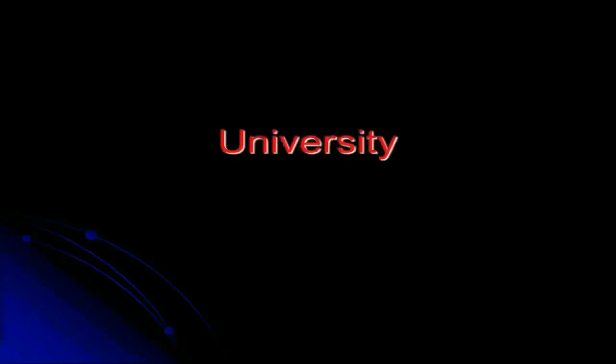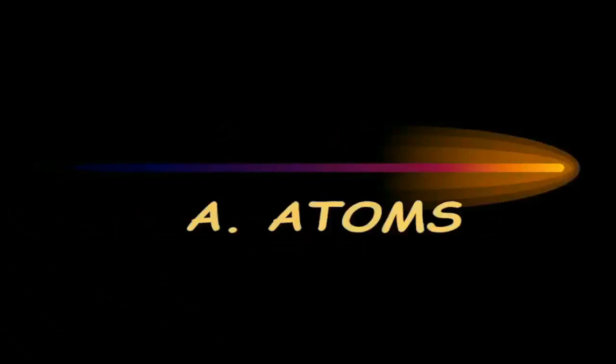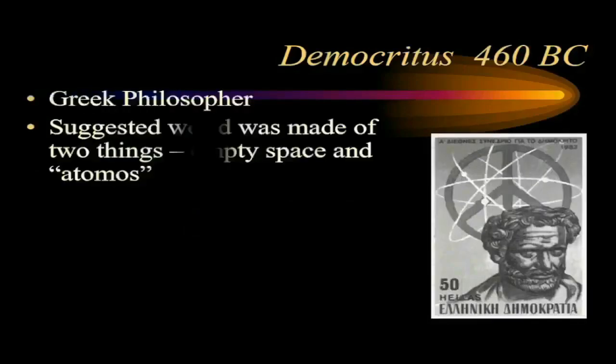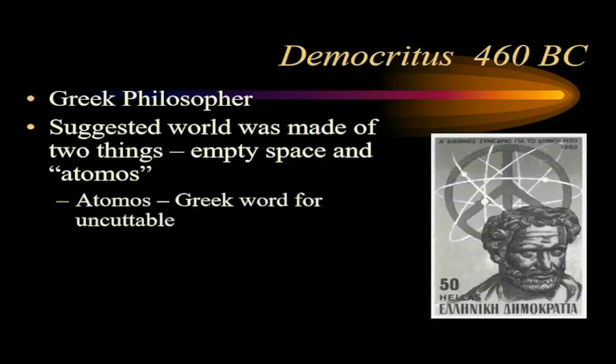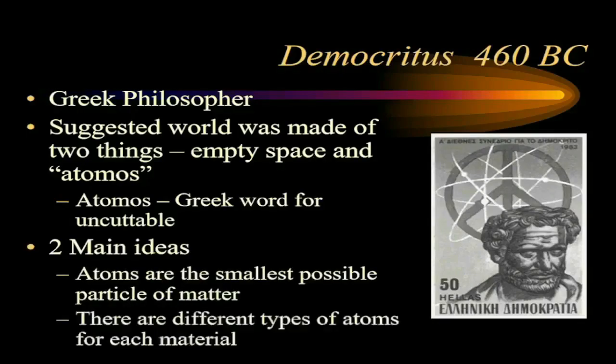Welcome to the university. In this video we will discuss the theories about the atom. Before anything else, please support our channel by liking this video, share our contents, subscribe to our channel, and hit the bell icon to get updated on our upcoming videos. Atoms are the fundamental structure that makes up visible matter in the universe. The notion of the atom began way back the time of Democritus, 480 years before Christ was born. Democritus, the Greek philosopher, suggested that the world was made of two things: empty space and atomos. Atomos is a Greek word meaning cannot be cut. This imposed two main ideas: one, atoms are the smallest possible particle of matter; two, it suggests that there are different types of atoms for each material. This idea remains untouched for nearly 2,000 years.